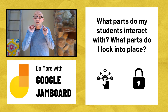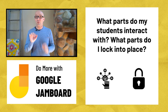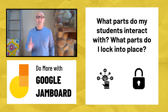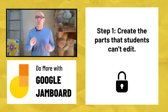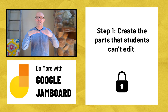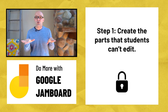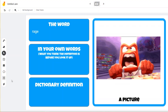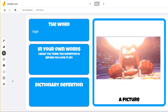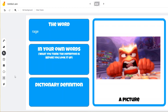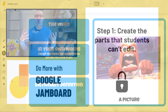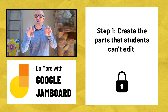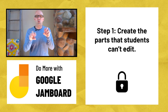Now that we know what our activity will look like, let's get into those three steps. Step one is to create those parts that students can't edit. Think of this as the framework or the foundation for your Jamboard activity. This can include a title and some instructions, a box where you want students to type something, labels, numbers, or anything else that you want set in place that isn't supposed to be moved around.